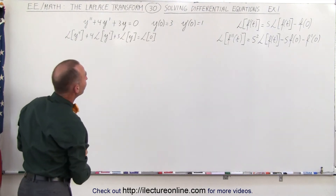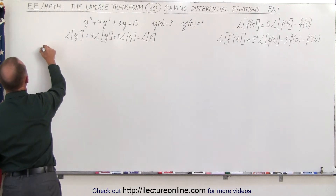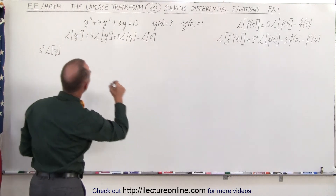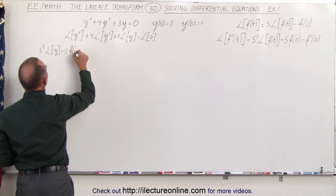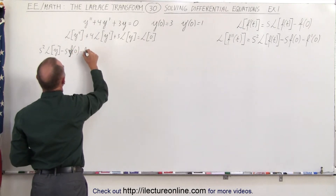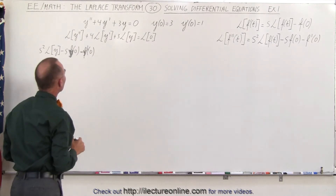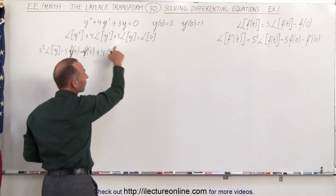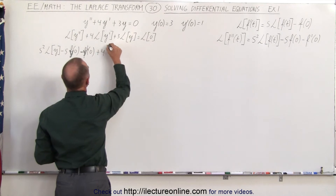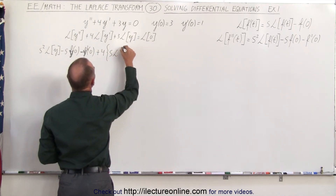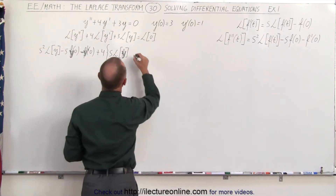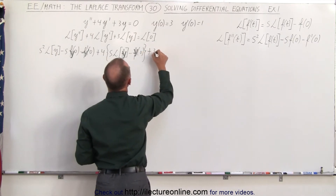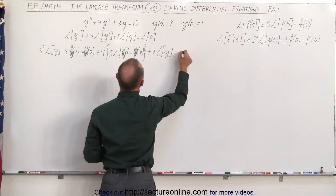Plugging in what they are using the equations on the board, we can say that this becomes s squared times the Laplace transform of y minus s times the function evaluated at zero minus the first derivative evaluated at zero. Plus four times the Laplace transform of the first derivative, using the equation over there, which is s times the Laplace transform of y minus the function evaluated at zero. And finally, plus three times the Laplace transform of y, and that equals zero.